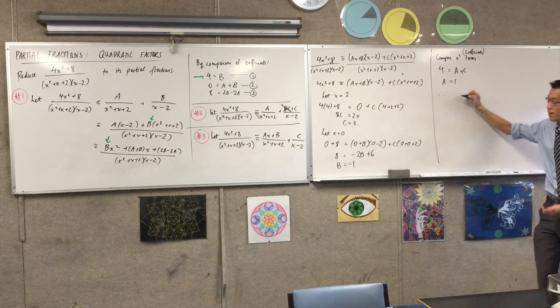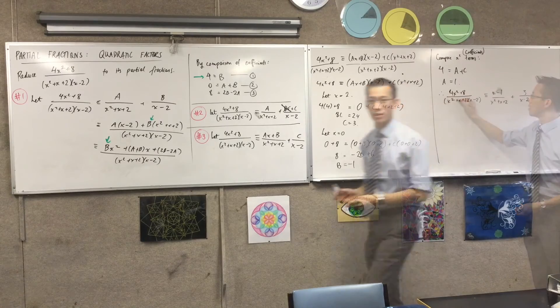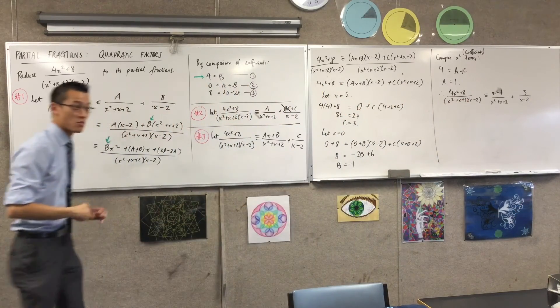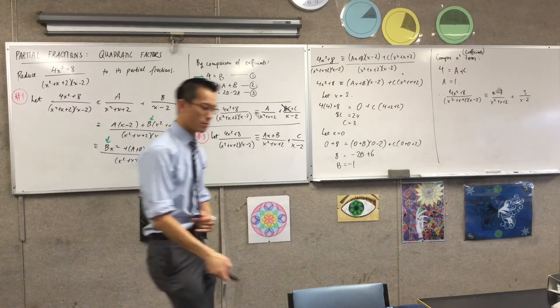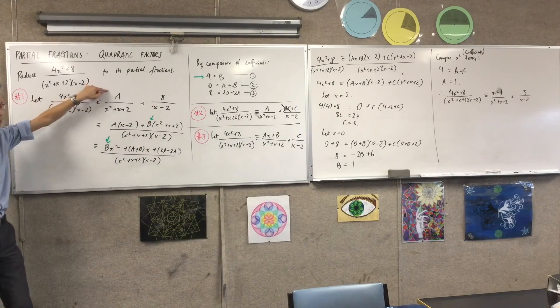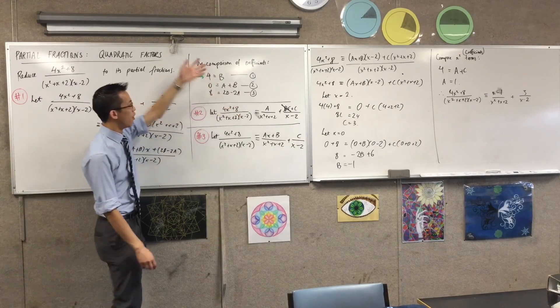So, therefore, 4x squared plus 8 all over. Did I put my a's and b's and c's in the right spots? Yeah, looks good. So, conclusions, right? This method here, this method here, too simple, too simple.